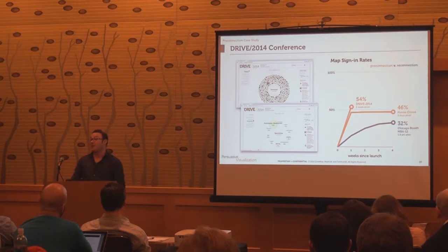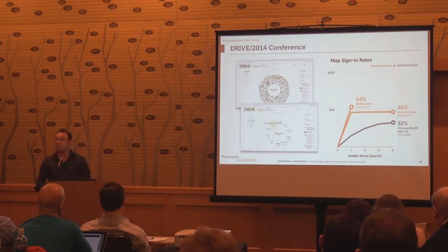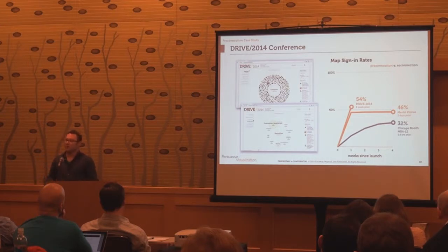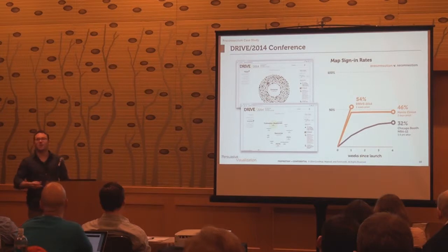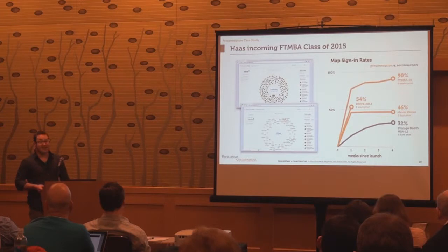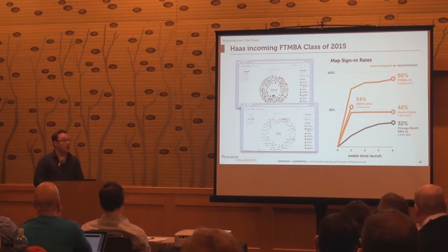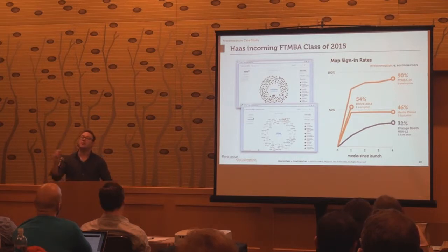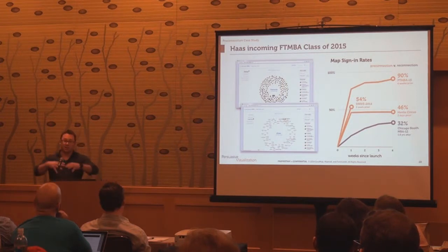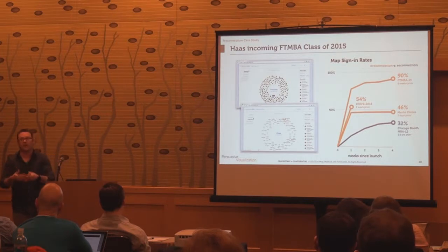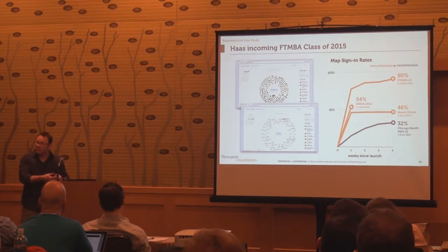The Drive map is at 54% sign-in right now, and that's just a week old. I'm comparing four weeks of reconnection with one week of pre-connection and there's more than a 20 percentage point difference. What about starting a program? You're going to start an MBA, you're six weeks out, and you want to meet all your classmates before you get to campus. We launched this map on the full-time MBA class of 2015 in mid-July; they started school in mid-August — 90% sign-in rate over that same steep curve. They all wanted to see where everyone was. When people segmented by city, they used those cities to organize happy hours to truly pre-connect. Because it's not just about digital connection — it's about real-life connection, bringing people together in a meaningful way.